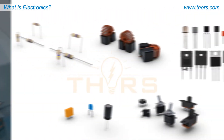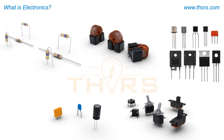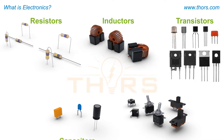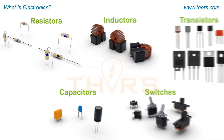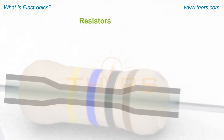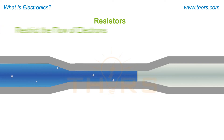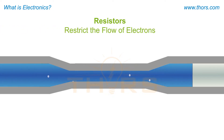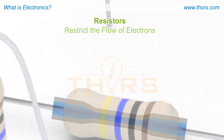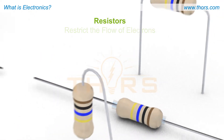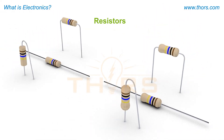The flow of electrons can be controlled using various electronic components such as resistors, inductors, transistors, capacitors, and switches. Resistors are devices used to provide the required voltage for any device by restricting the flow of electrons. For the purposes of this video, resistors will be focused on because they are essential to understanding voltage and current.